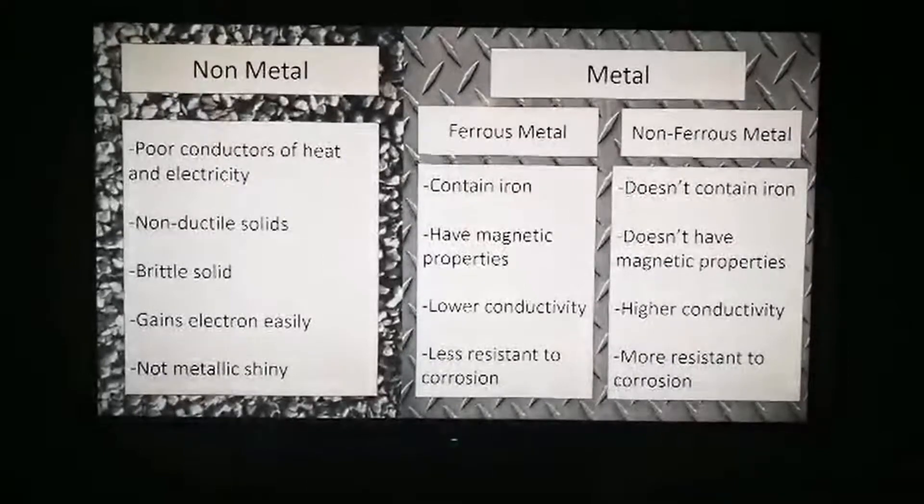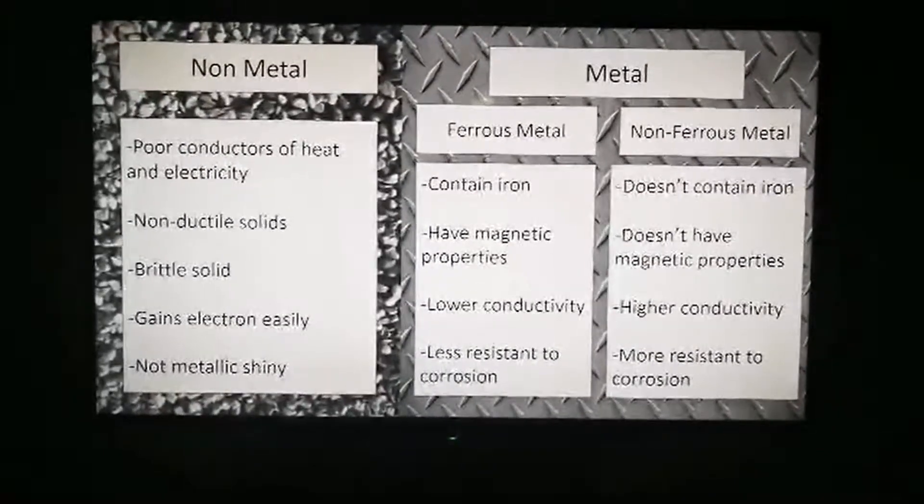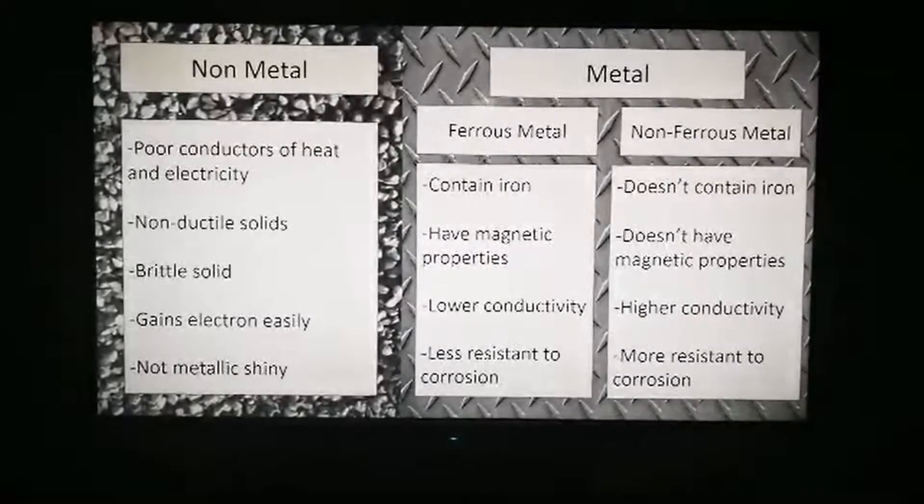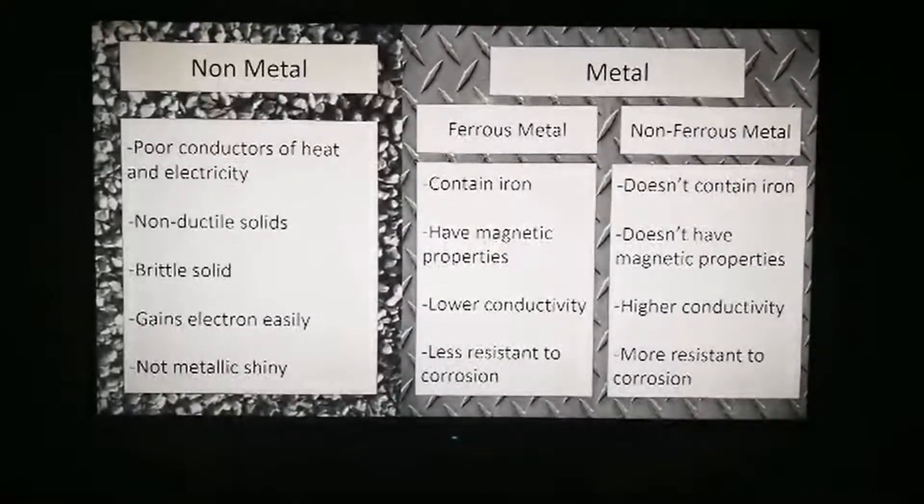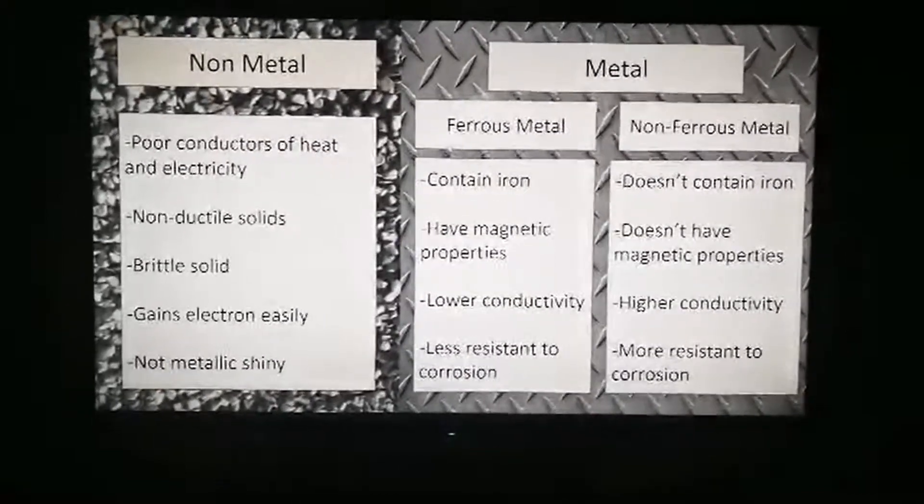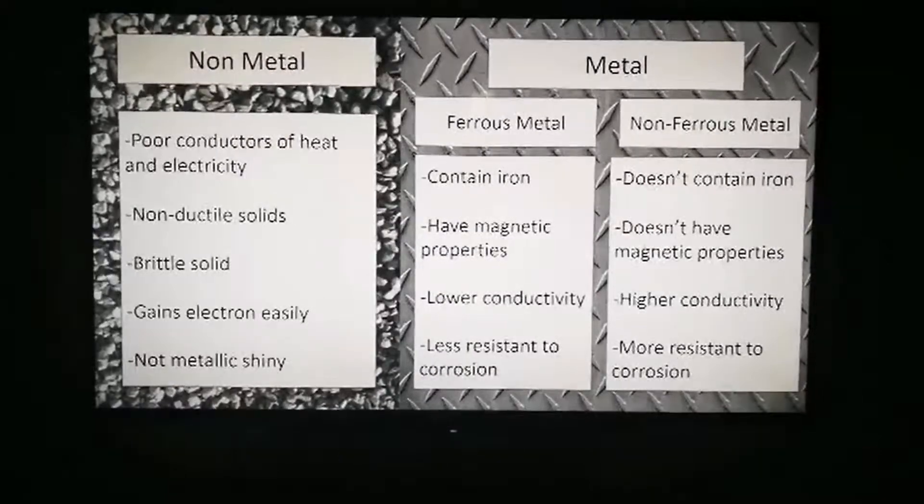Examples of non-ferrous metal are aluminum, titanium, gold, platinum, and many more. For ferrous metal, some of the examples are iron, mild steel, high carbon steel, and so on.